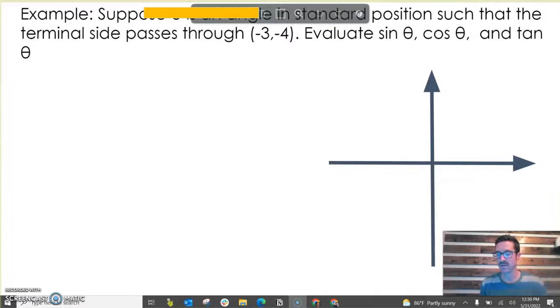The first thing I like to do is get a good look at this graphically. So I'm going to plot the point (-3, -4). My point is right here. There would be the terminal side of the ray, and since it's in standard position, the initial side is there. And this is our angle theta.